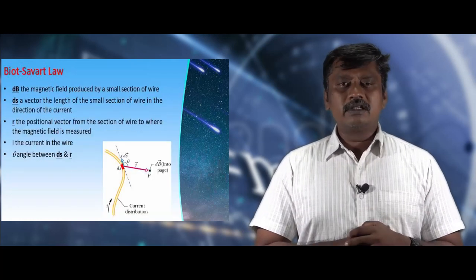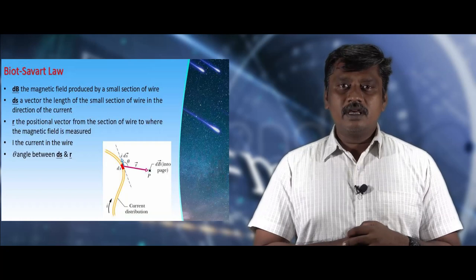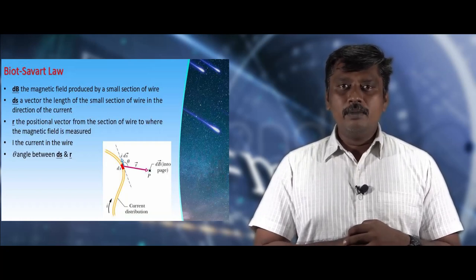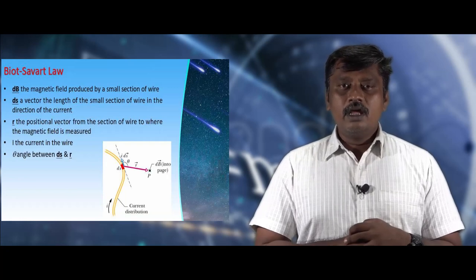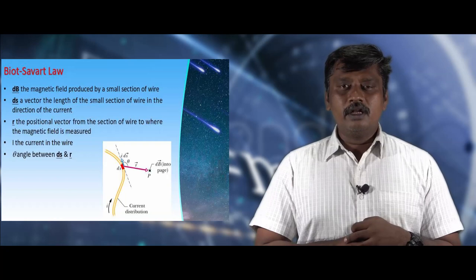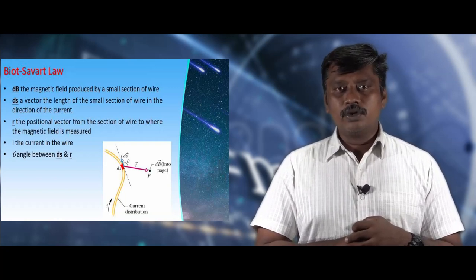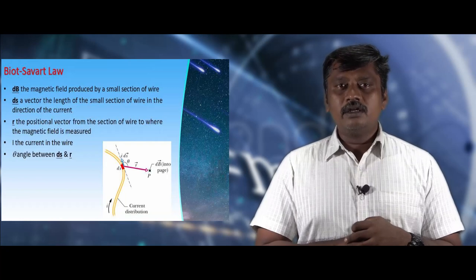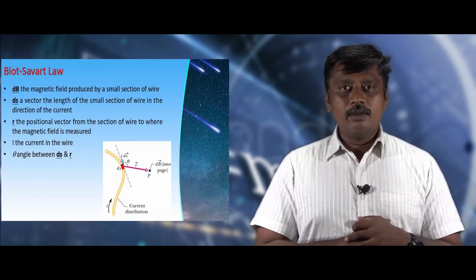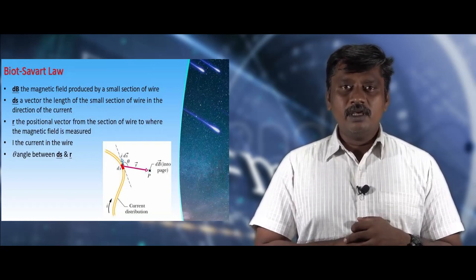To understand Biot-Savart law, let us consider a current carrying wire carrying current I. Let us consider a small element ds on the wire. Due to that element there will be a current element — that means in that elemental length, I is the current flowing and Idl is the current element. Due to that current element there will be a magnetic induction dB.